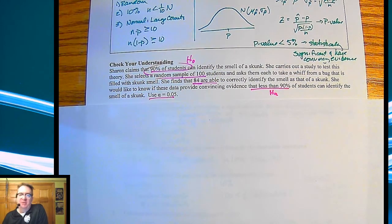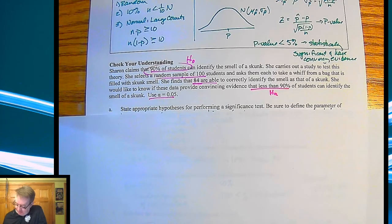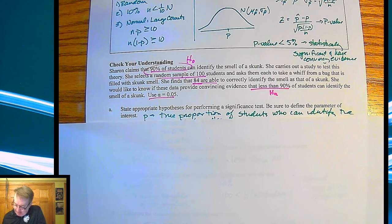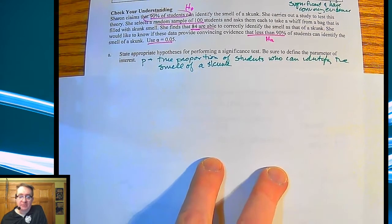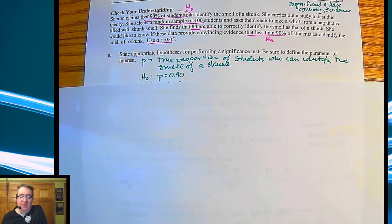If they don't remember, it's going to be 5%. Occasionally they will ask you for 1% because, let's face it, if you're doing something particularly in medical fields and stuff like that, you really want to have a high bar to make sure everything's going okay. State the appropriate hypothesis and be sure to find the parameter of interest. So our parameter of interest is P is the true proportion of students who can identify the smell of a skunk. Our null hypothesis is 90%. And our alternative hypothesis is that P is less than 90%.